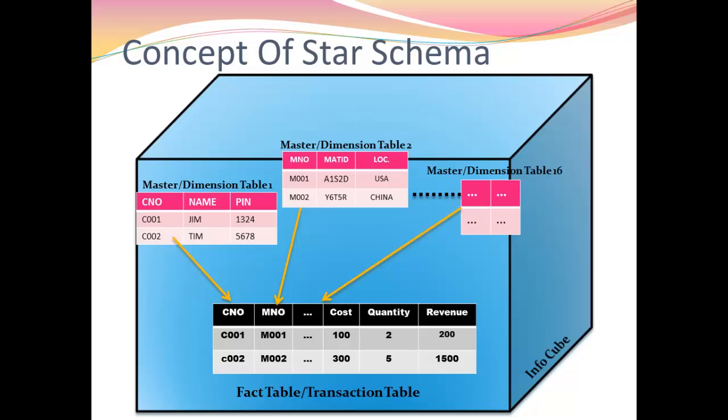Let's get into the concept of star schema. Consider a master table which has information about customer name, number, and pin, and another master table which has information about material number, material ID, and its location. Likewise, we will have up to 16 master tables or dimension tables, and these tables are connected to our fact table, which is also called the transaction table.